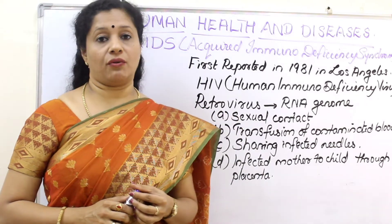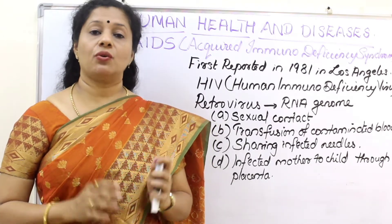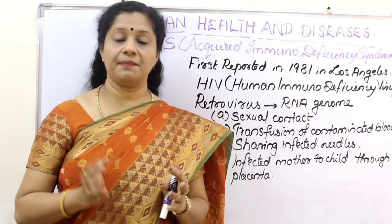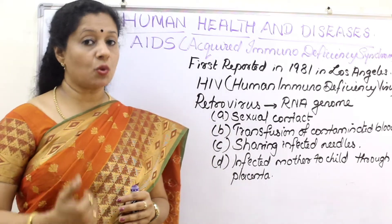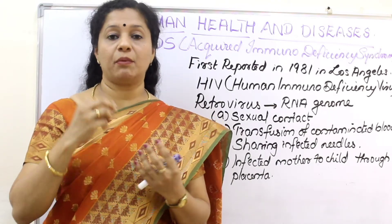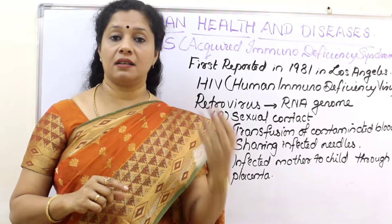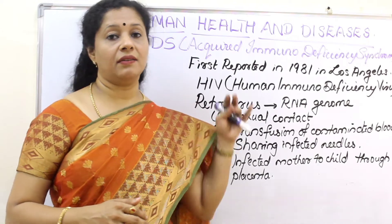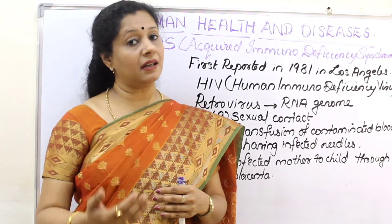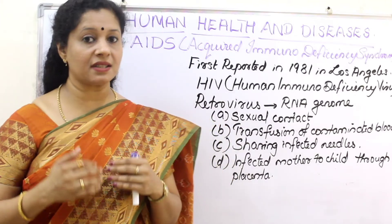HIV is a retrovirus. Retrovirus means a virus with RNA as the genetic material. Usually a cell has three entities: cell membrane, cytoplasm, and nucleus. But when it comes to viruses, they don't have a cell. Instead, they have a protein coat called a capsid, made up of individual units called capsomeres, and a genetic material. The genetic material can be RNA or DNA. If it is RNA, we call it a retrovirus. Retroviruses can infect human beings and are also used as vectors in biotechnology because of this infectious property.